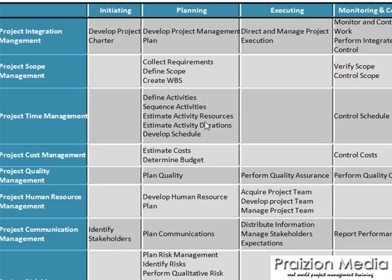Once you've got an idea of that, you move through sequencing the activities to estimating the actual resources that you need. In order to estimate the resources you need in a realistic fashion, you should know which resources are available — which again goes back to having some inputs from Develop Human Resource Plan. In addition, when you move into estimating activity durations, you need to have at the back of your mind different risk scenarios that might occur in the project. As a result, you need to have started planning risk management.